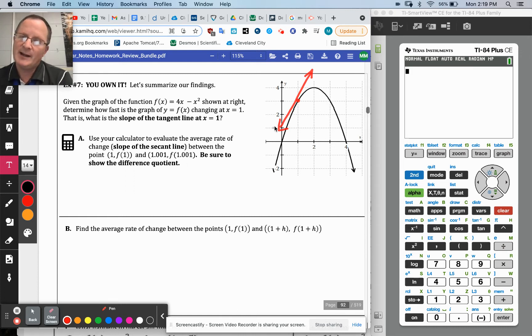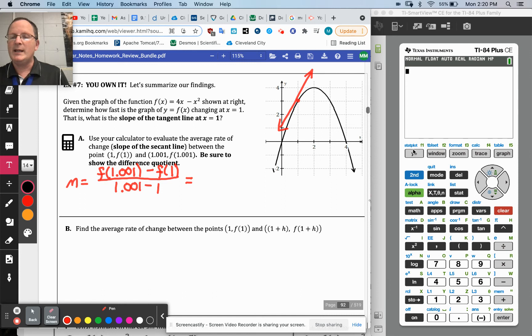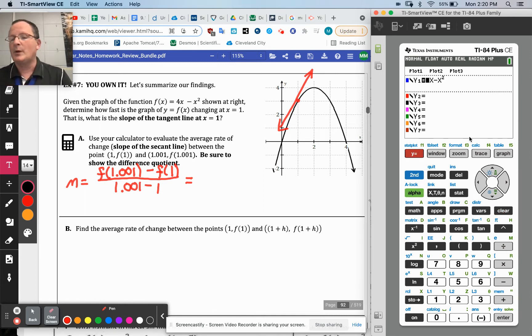So it says use the difference quotient to find an approximation, the average rate of change, an approximation of that. If I'm really close, I mean I don't even think I could draw the one that's going between 1 and f(1.001) by hand. It'll look exactly like that one. They would be so close to each other. So the slope of that secant then would be equal to y2 minus y1.